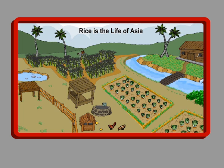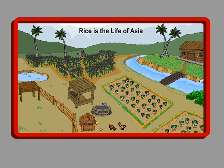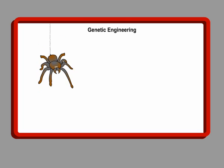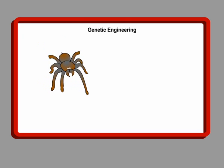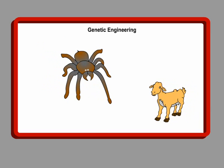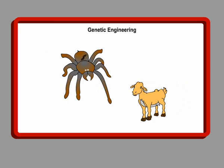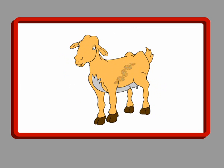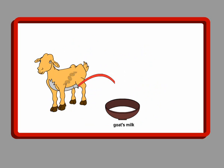For centuries, farmers have successfully selected, bred, and cross-bred traditional local rice varieties using natural and safe breeding processes. In the last 10 to 15 years, agribusiness corporations have experimented with engineering life forms — for example, the transfer of a spider gene to goats to produce silk in their milk, and human liver genes to rice to make it resistant to pesticides. This is called genetic engineering.